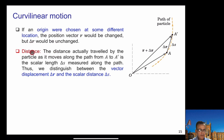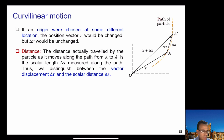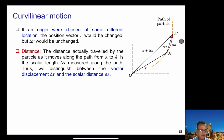In curvilinear motion, we can distinguish between displacement and distance, which was difficult in rectilinear motion. The distance traveled by the particle as it moves along the path from A to A' is represented by delta s, measured along the orange curved path. Thus, delta r is the vector displacement — the shortest distance between A and A' — while delta s is the scalar distance traveled along the path.